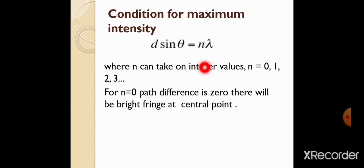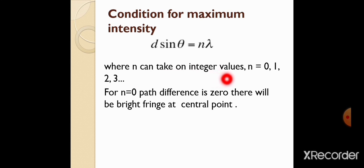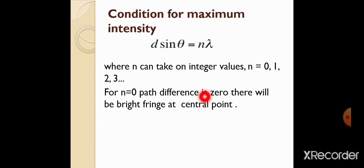Next we will see conditions for maximum and minimum intensity. For maximum intensity (constructive interference): d sinθ = nλ, where n can take integer values n = 0, ±1, ±2, ±3. Yaani ke central point se above values positive mein ayengi aur central point se below negative put kar denge. n = 0 ke liye path difference 0 hoga aur bright fringe banegi.